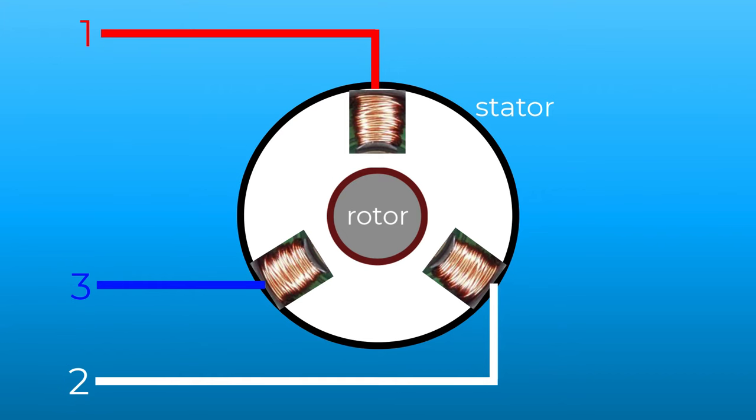When voltage is applied to the stator coils, each coil draws current and has a turn at being magnetized.